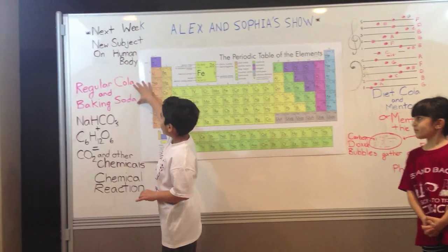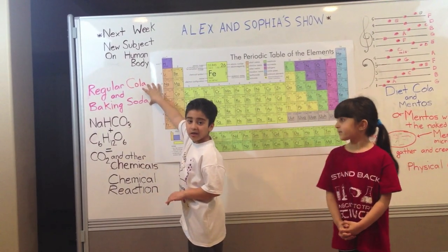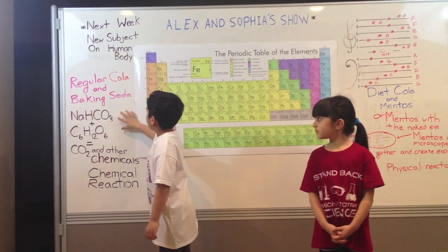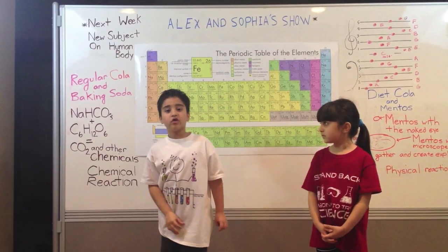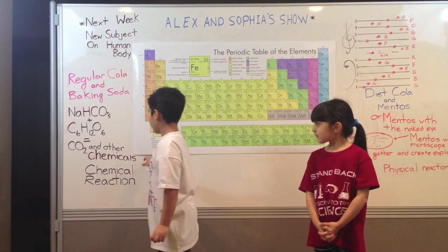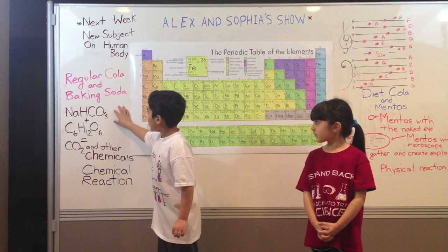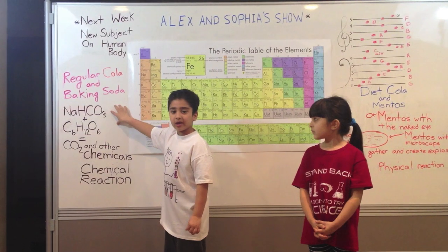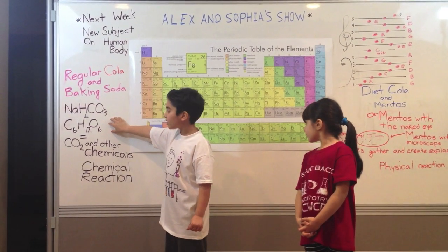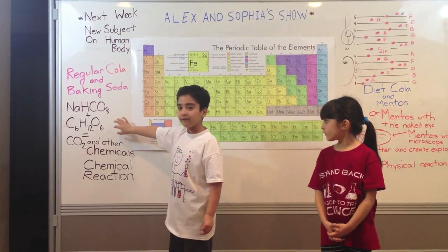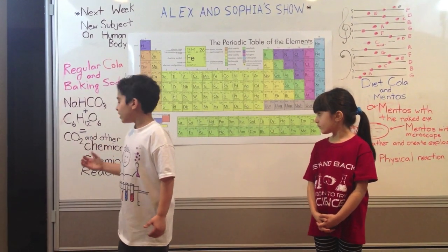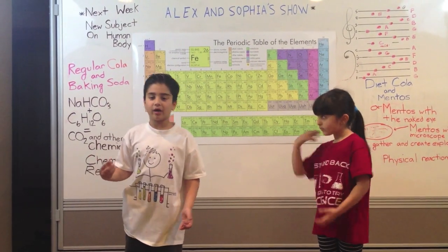The next experiment is between regular cola and baking soda. The baking soda reacts with the sugar in the regular cola, which can be fructose or glucose. This is the chemical formula of baking soda: NaHCO3. This is the chemical formula of glucose: C6H12O6. They come together and create CO2 and some other chemical by-products.